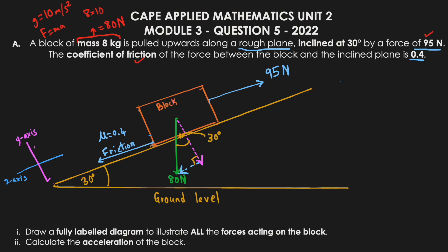For any action there is an equal and opposing reaction, so the block also experiences a normal force. The normal force acts perpendicular to the inclined surface — along the y-direction. We now have all the forces acting on this block identified in our diagram.